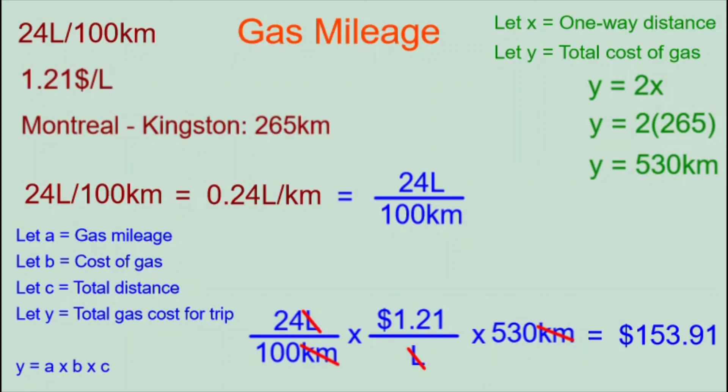This is the total gas cost for a round trip between Montreal and Kingston when gas costs $1.21 per liter, using a vehicle getting 24 liters per hundred kilometers. The calculation seemed complicated, but every time we do this type of calculation it works the same way. With practice it becomes easy, and we're using an algebraic model — which is the whole point of the math course we're studying. That is today's Daily Dose of Math — please like, subscribe, and share.